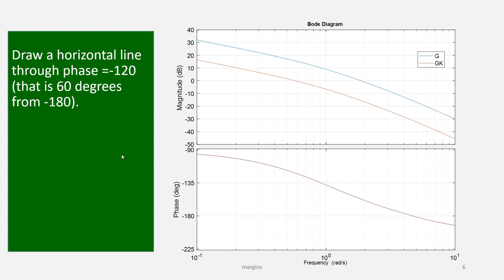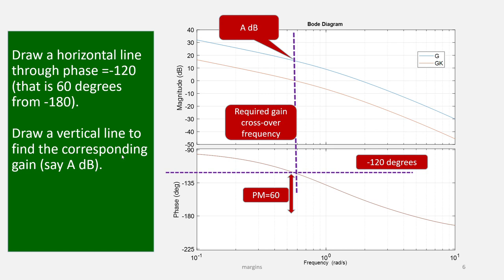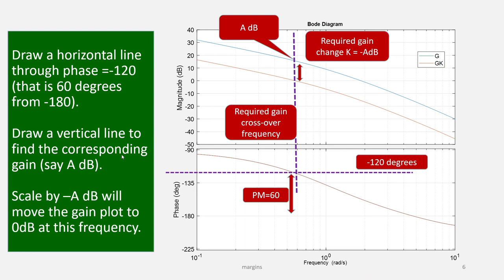So how would we do this with proportional? First, you draw a horizontal line through the phase at minus 120, because that will show you where you can get a phase margin of 60. Then you draw a vertical line up to the gain plot and you find the corresponding gain of the system. The system here is the blue line. Now you want that gain to be zero decibels, so in essence you have to scale by minus a decibels in order to get zero decibels at the correct frequency. And that's your simple proportional design.